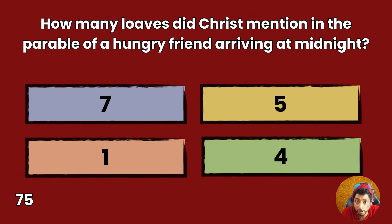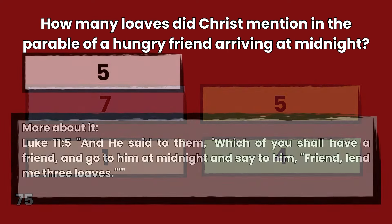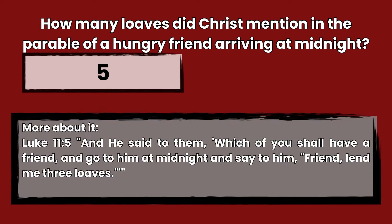Question 75: How many loaves did Christ mention in the parable of a hungry friend arriving at midnight? 7, 5, 1, or 4? Answer: 3. Luke 11 — And he said to them, Which of you shall have a friend and go to him at midnight and say to him, Friend, lend me three loaves?